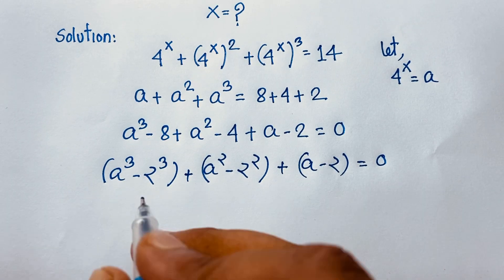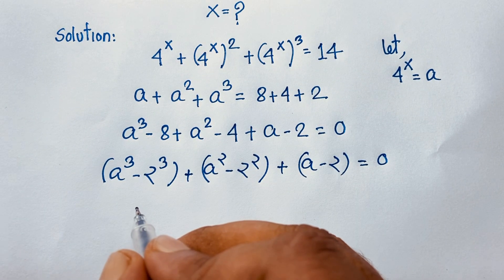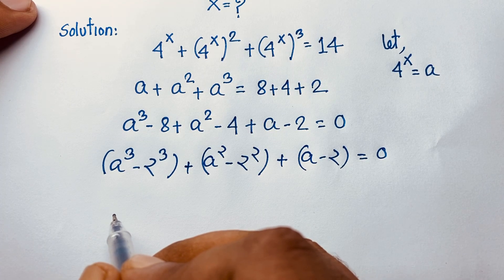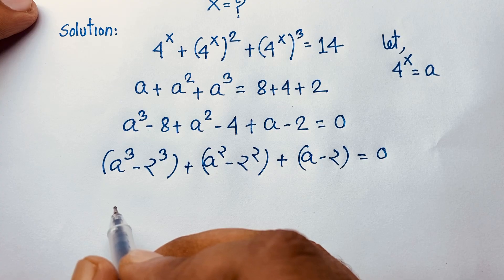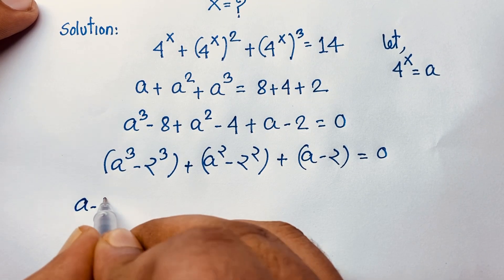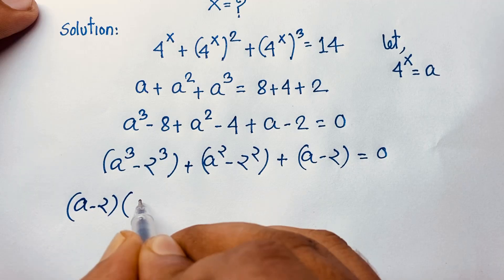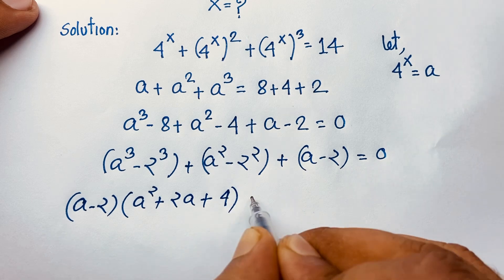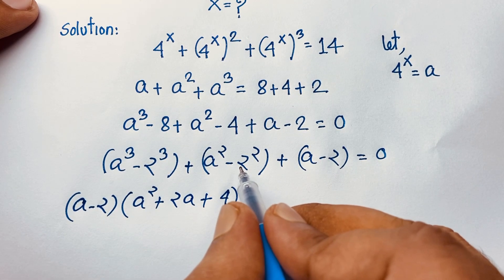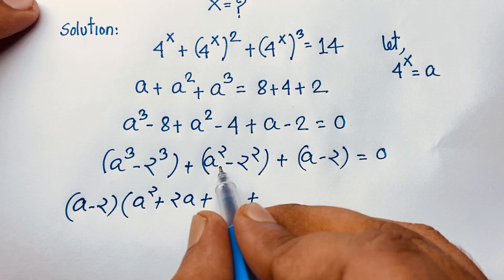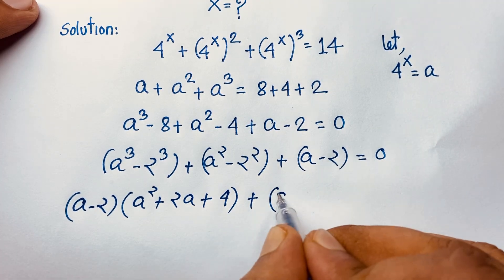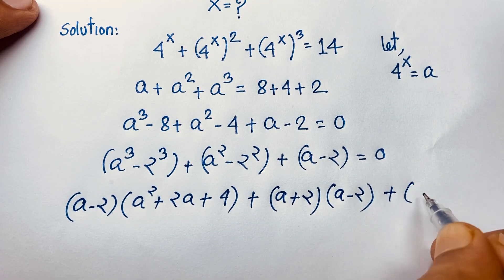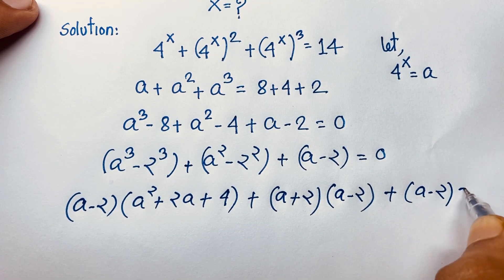Applying the formula a cubed minus b cubed equals (a minus b)(a squared plus ab plus b squared), we get (a minus 2)(a squared plus 2a + 4). And a squared minus b squared equals (a plus b)(a minus b), so that gives (a plus 2)(a minus 2). Plus (a minus 2) equals 0.